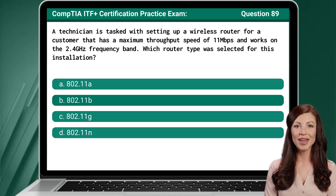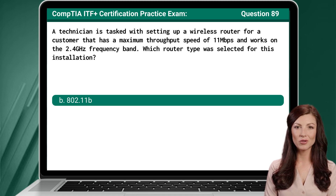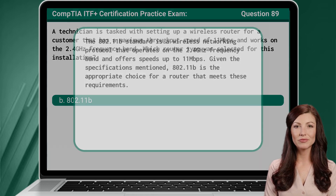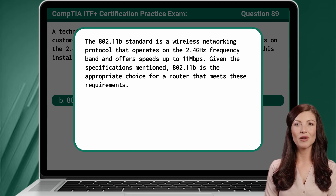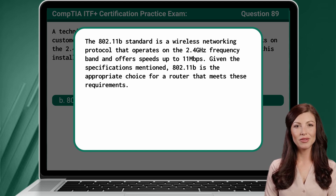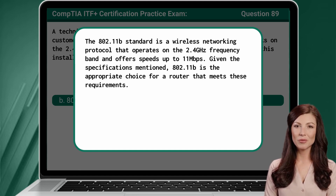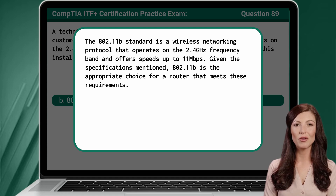The answer is B. 802.11b. The 802.11b standard is a wireless networking protocol that operates on the 2.4 gigahertz frequency band and offers speeds up to 11 megabits per second. Given the specifications mentioned, 802.11b is the appropriate choice for a router that meets these requirements.